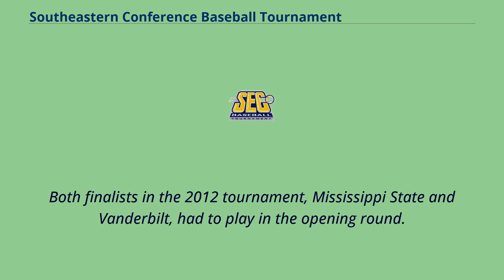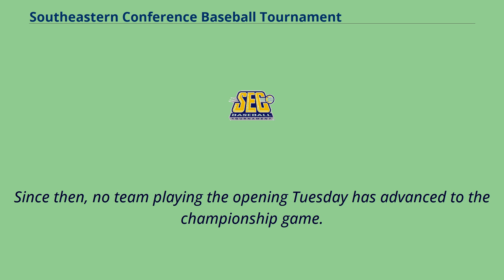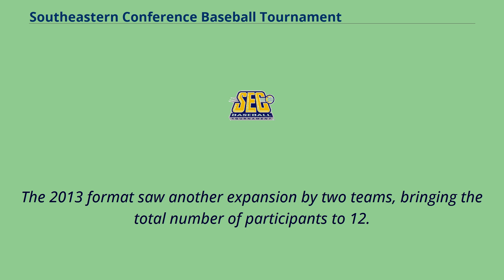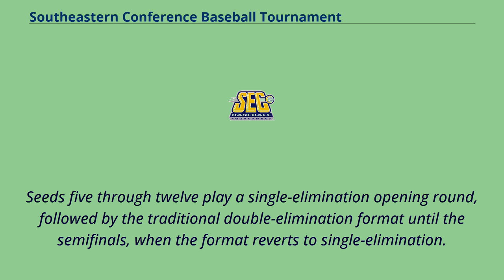Both finalists in the 2012 tournament, Mississippi State and Vanderbilt, had to play in the opening round. Since then, no team playing the opening Tuesday has advanced to the championship game. The 2013 format saw another expansion by two teams, bringing the total number of participants to 12. Seeds 5 through 12 play a single elimination opening round, followed by the traditional double elimination format until the semifinals, when the format reverts to single elimination.